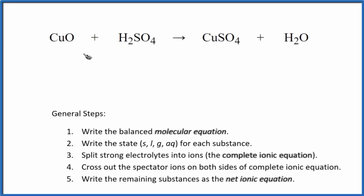In this video we'll write the net ionic equation for CuO plus H2SO4. This is copper oxide and sulfuric acid. We're going to assume that this sulfuric acid is going to ionize completely, that both of these hydrogen atoms are going to dissociate into their ions. This is a strong acid.